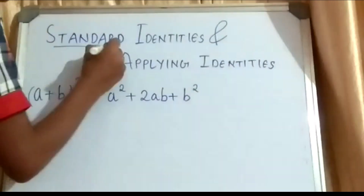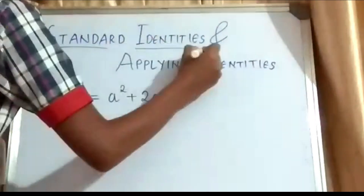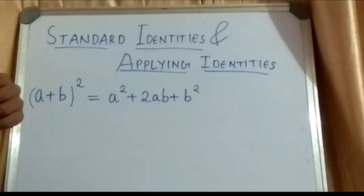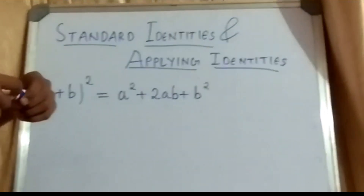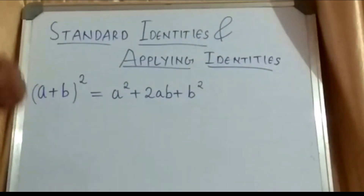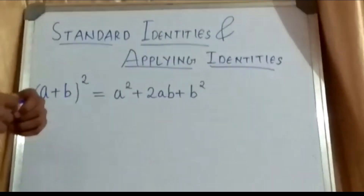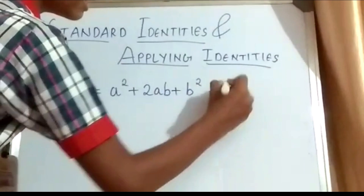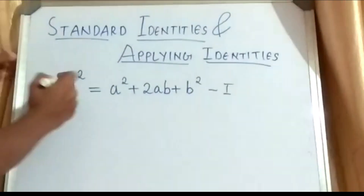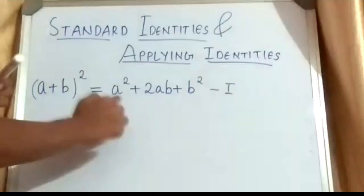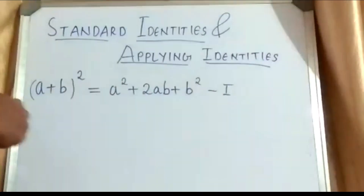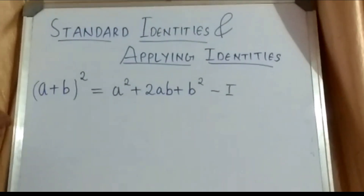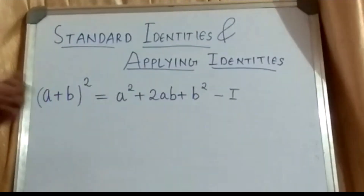Now let's move to standard identities and applying identities. There are four standard identities which we have to study in this chapter. But in this video, I am only discussing the first standard identity, which is: (A + B)² = A² + 2AB + B². So let's explore this first identity more deeply.